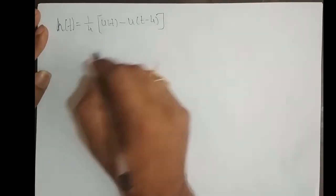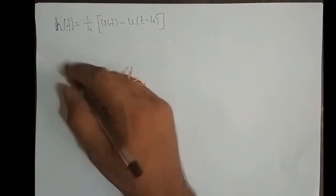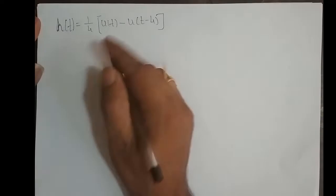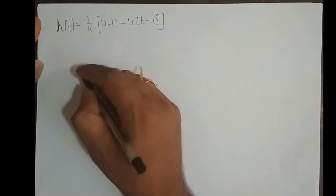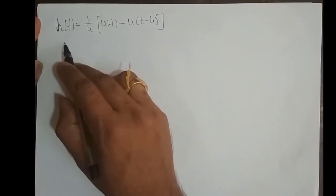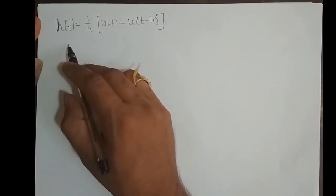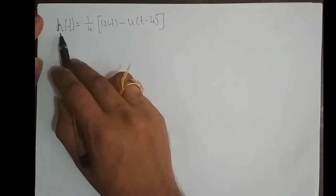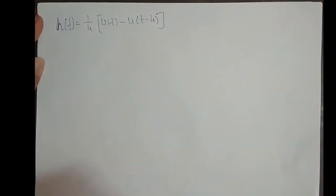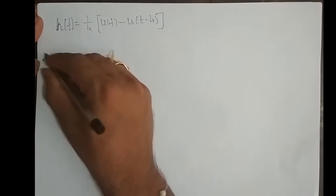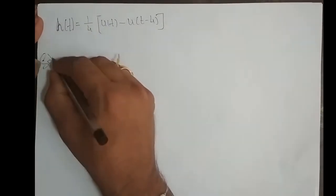We shall take a few more examples on finding the step response of a continuous-time system. Let the impulse response h(t) = (1/4)[u(t) - u(t - 4)]. We shall try to solve this problem.